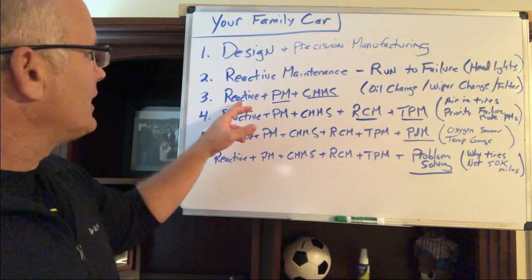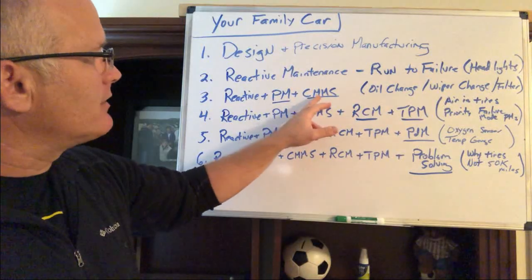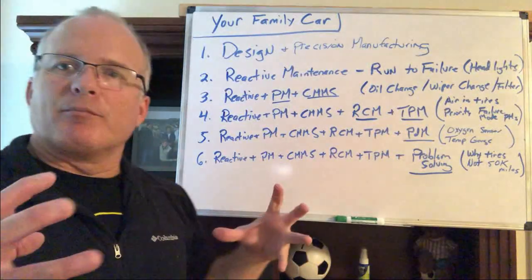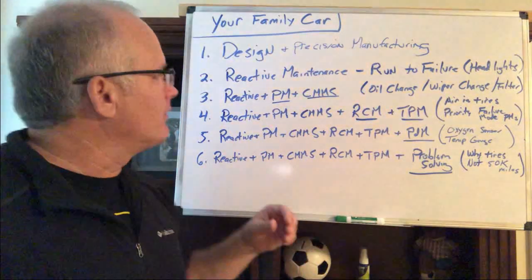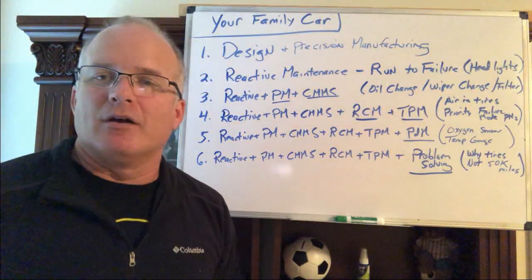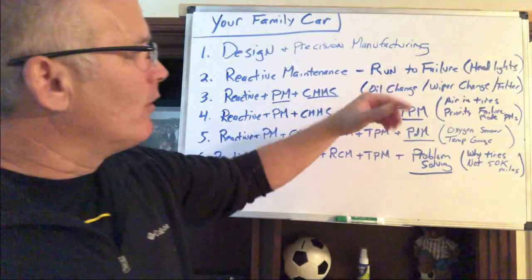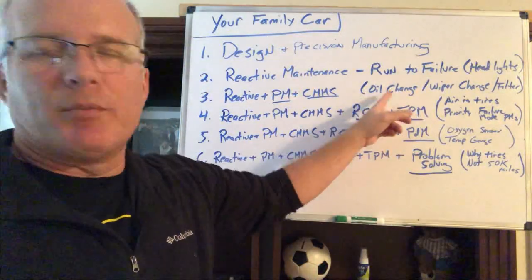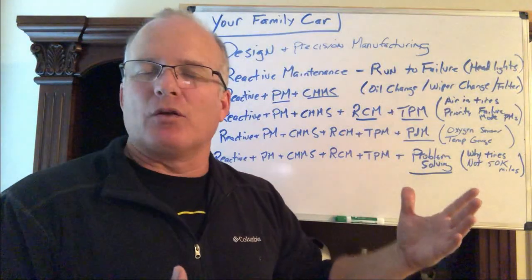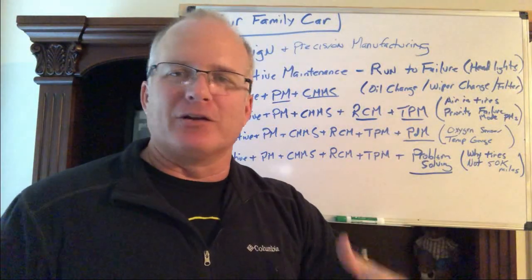Number three is reactive maintenance plus some preventive maintenance, and also a computerized maintenance management system — CMMS. Basically it's a computer that contains all the knowledge associated with the equipment. PM is preventive maintenance and it's typically time-based: once a month you do this, every six months you do that, once a year you take this action. An oil change is typically done by miles, but that's just an estimate — it's not based on the actual condition of the oil. It's what they forecast the condition to be based on standard driving, and who drives standard?